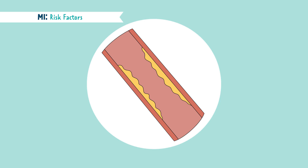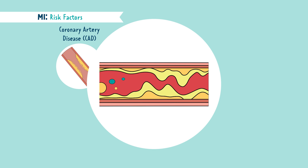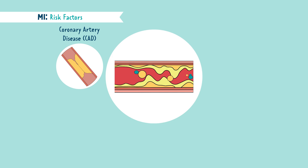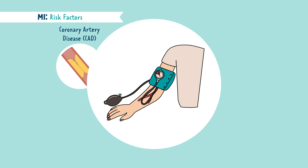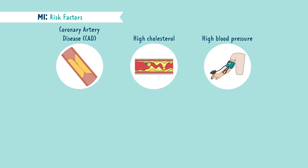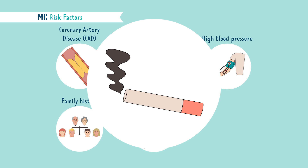So who is at risk for an MI? A patient with a history of coronary artery disease, high cholesterol — which causes that plaque buildup in the vessels — high blood pressure. The reason high blood pressure can cause an MI is that it damages the vessels, causing stenosis and narrowing. A patient with a family history of heart conditions, and other causes like stressors and smoking.